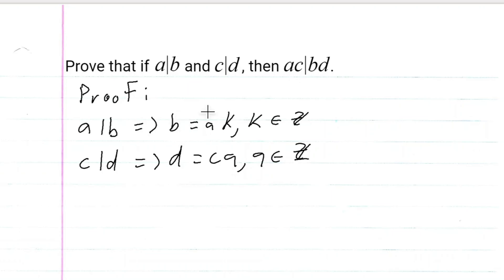Now let's investigate BD because we have the product BD here. So this implies that B times D is equal to AK times CQ.